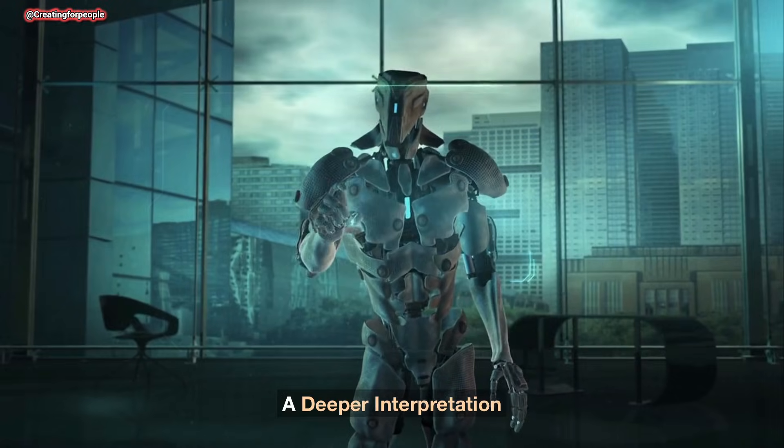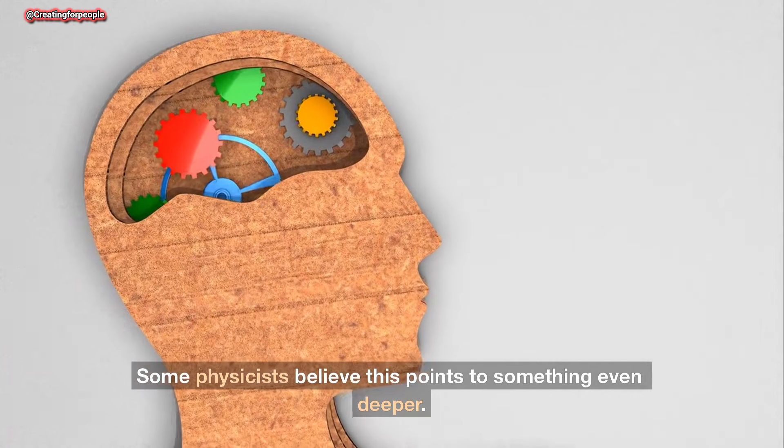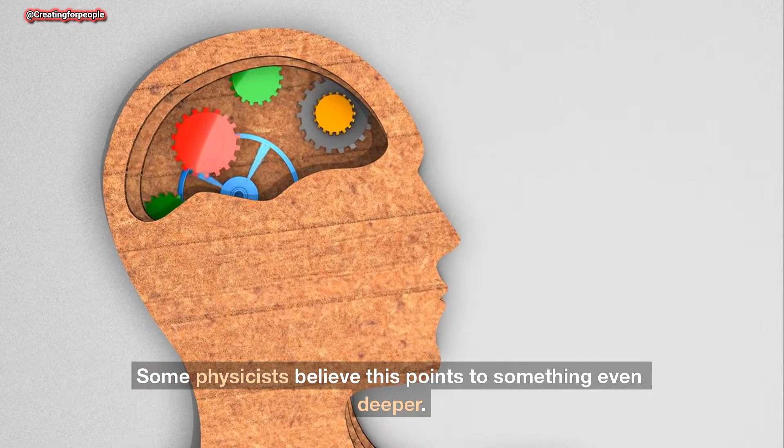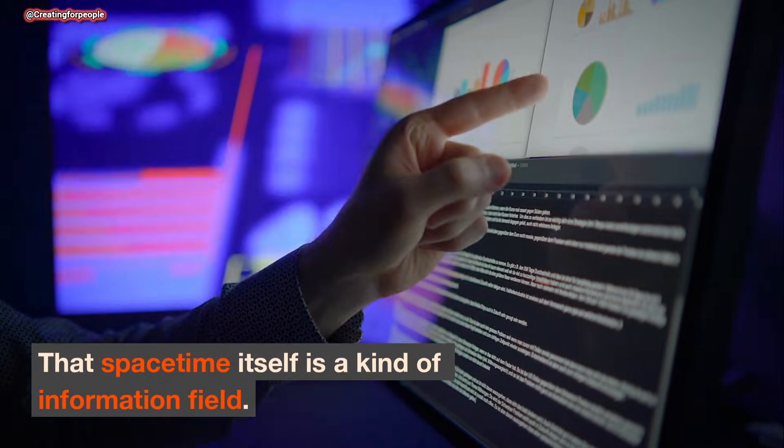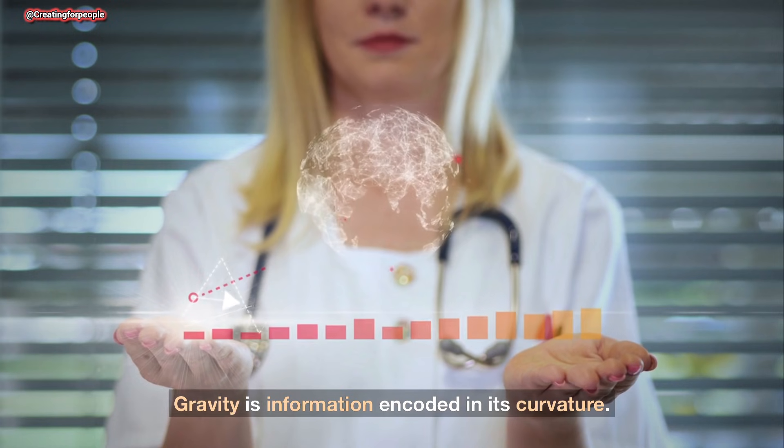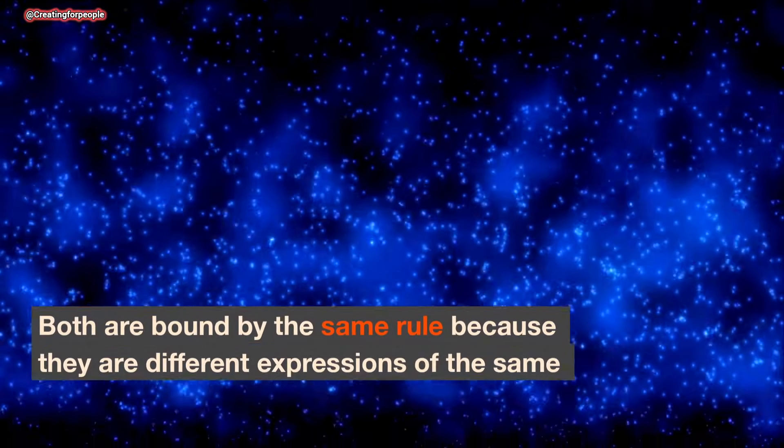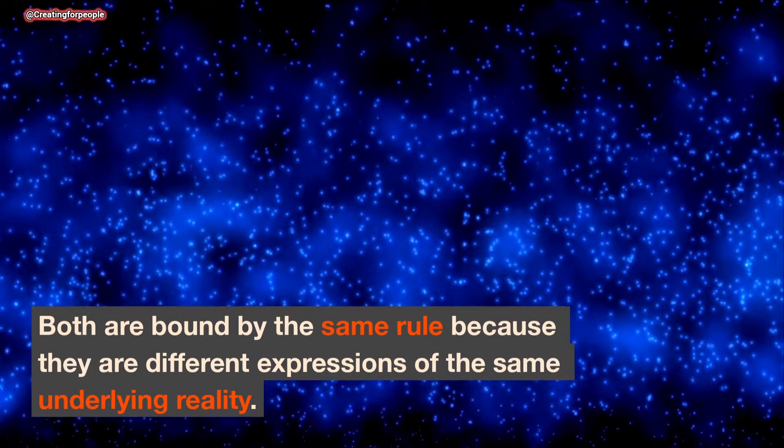A deeper interpretation. Some physicists believe this points to something even deeper: that space-time itself is a kind of information field. Light carries information through it. Gravity is information encoded in its curvature. Both are bound by the same rule because they are different expressions of the same underlying reality.